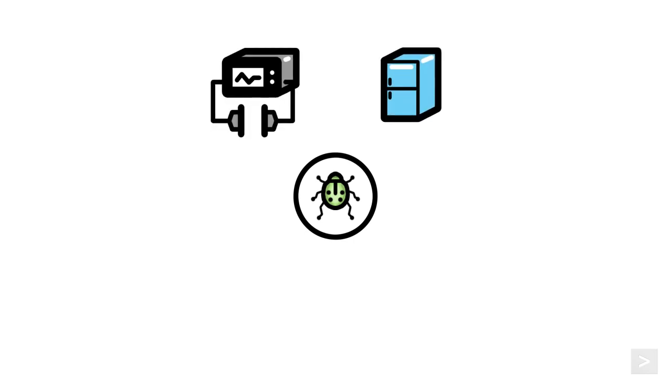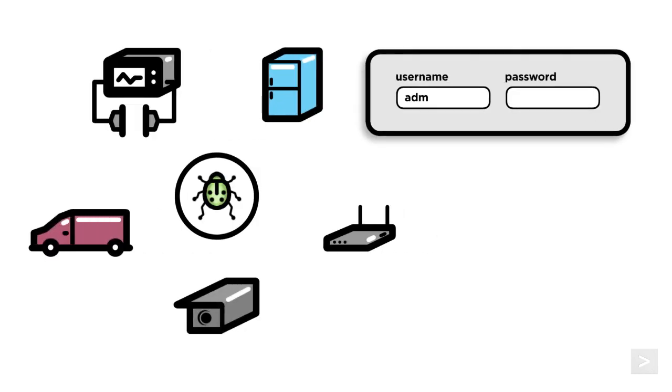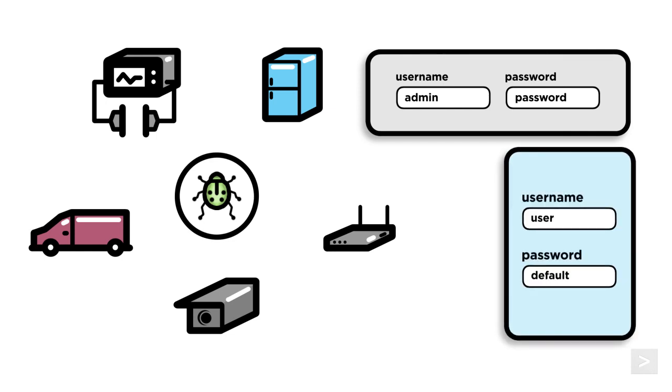Mirai targeted devices that are part of what we call the Internet of Things, or IoT — almost any physical item that can connect to the internet, from medical devices and refrigerators to network routers, security cameras, vehicles, and even washing machines. Mirai would search for IoT devices running a stripped-down version of Linux OS that kept their default username and password, then log in and gain control of the device.